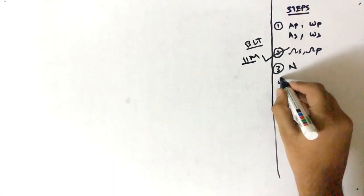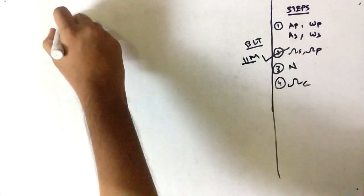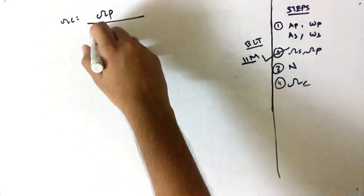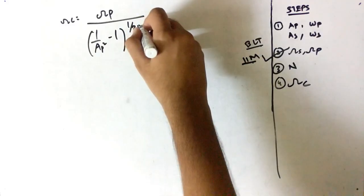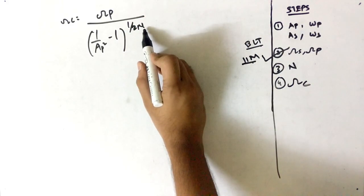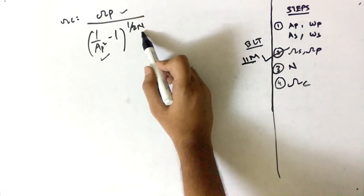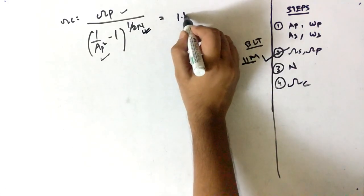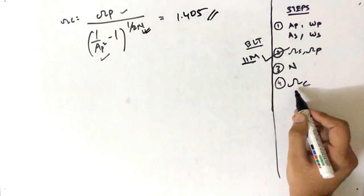Step four is finding the cutoff frequency. The formula is Ωc = Ωp / (1/ap² − 1)^(1/2n). With n = 6 and all other values known from previous steps, substituting gives a cutoff frequency of 1.405.